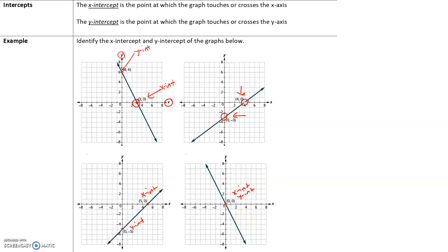Here's what I want you to notice. Every x-intercept — (3, 0), (4, 0), (5, 0) — the x-value changes but the y-value is always 0. The reason is that to be on the x-axis, the y-value always has to be 0. That's why for every x-intercept, the y-value is 0.